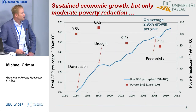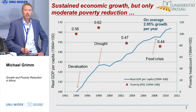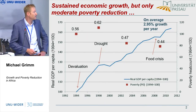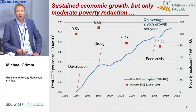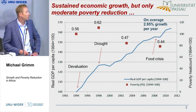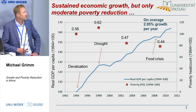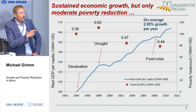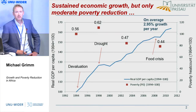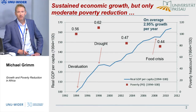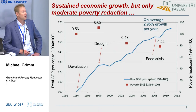Here you see the whole picture — the growth of GDP per capita. On average over this period, 1994 to 2012, it's almost 3%, so that's quite good. There are a few interruptions due to droughts and the food crisis later on. But if you look at the red squares, there you see the poverty headcount estimate, and you see an increase of poverty in the earlier period and then a decline. But this decline is not very pronounced.